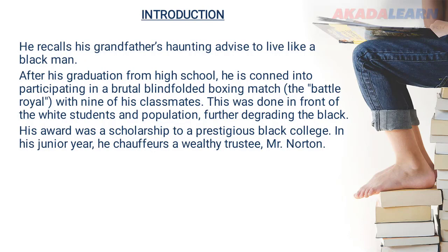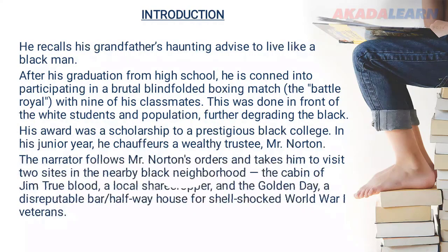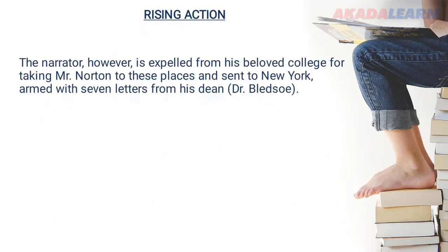His award was a scholarship to a prestigious black college. In his junior year, he shuffles a wealthy trustee, Mr. Norton. The narrator follows Mr. Norton's orders and takes him to visit two sites in the nearby black neighborhood: the cabin of Jim Trueblood, a local sharecropper, and the Golden Day, a disreputable bar and halfway house for shell-shocked World War One veterans. This indirectly enraged Mr. Norton, as Trueblood was connected to a scandal involving his daughter's pregnancy.